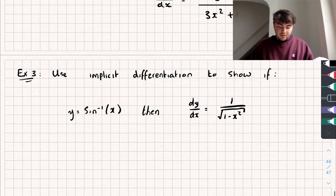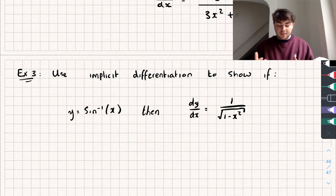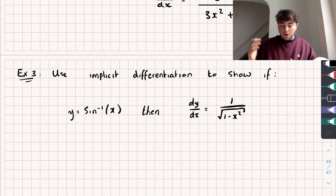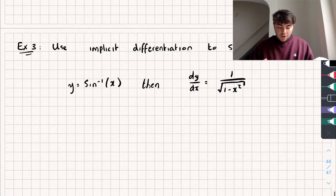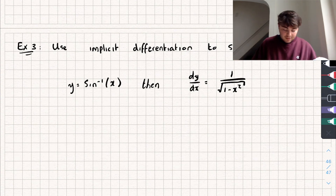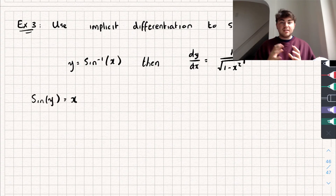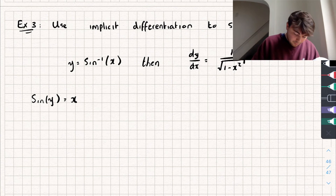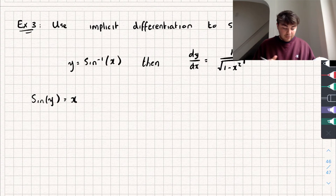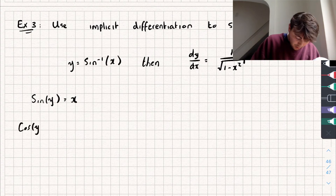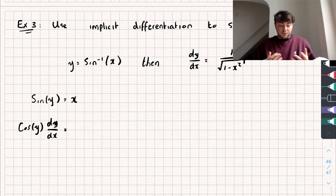For the last example, we use implicit differentiation to show that if y = arcsin(x) then dy/dx = 1 / √(1 − x²). To do this, we rewrite the equation: if y = arcsin(x), then sin(y) = x. Taking the derivative of both sides using implicit differentiation and the chain rule, the derivative of sin(y) with respect to x is cos(y)·(dy/dx), and the derivative of x with respect to x is just 1.